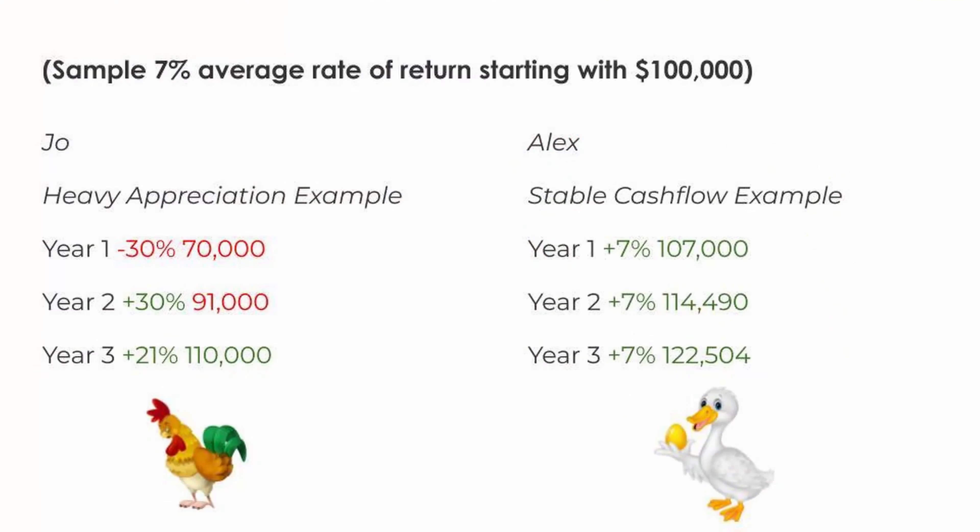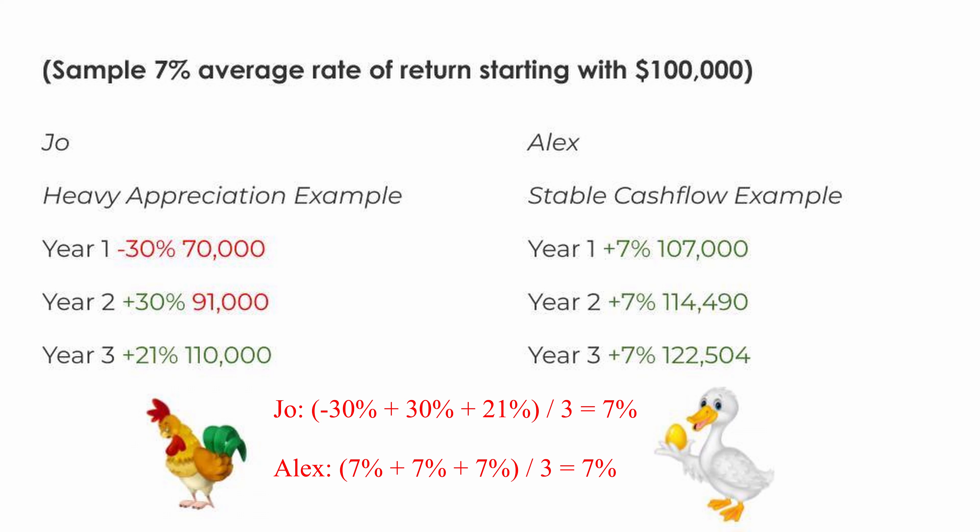Here's an example. We have Joe and Alex — they both started with $100,000. Joe invests in a heavy appreciation example in the stock market, and his return comes from the value of the stock going up and then selling it for a profit. Alex invests in a stable cash flow example in real estate, and his return comes from rental or interest income regardless of whether the asset's value goes up or down. Both have a 7% average annual rate of return, but by the end of year 3, Alex has $12,000 more than Joe.